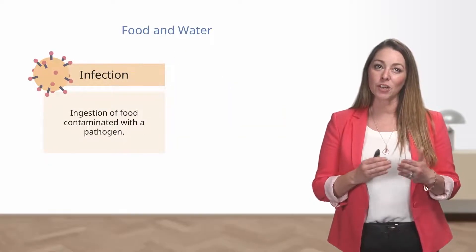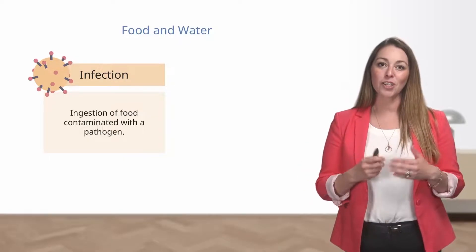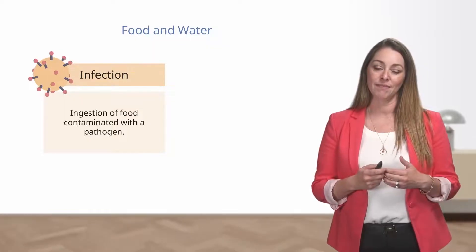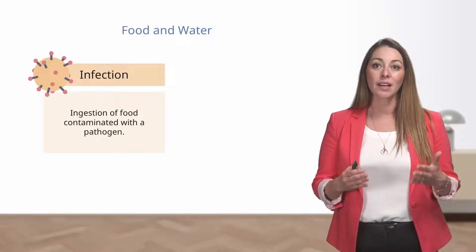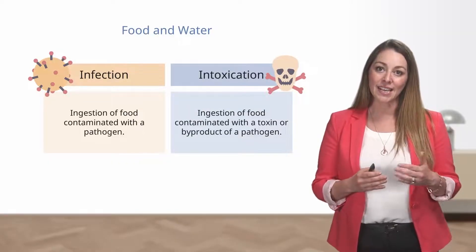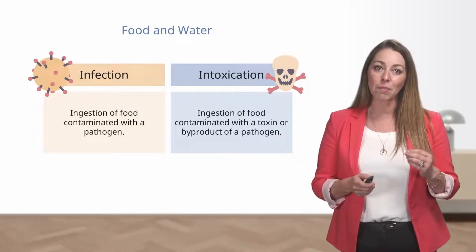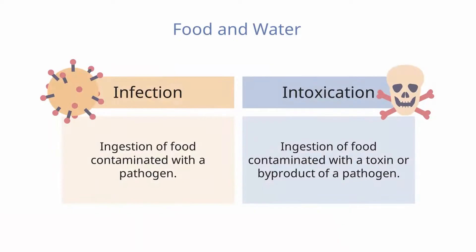Contamination of food that leads to human illness occurs in two ways: either through infection or intoxication. Infection occurs when food has been contaminated directly by the pathogen and that pathogen is ingested — for example, ingesting food contaminated by E. coli or Salmonella. Intoxication, on the other hand, occurs when the food ingested has been contaminated by a toxin that is a byproduct of the pathogen. For example, botulism intoxication occurs as a result of a byproduct of bacterial growth, not the bacteria itself.